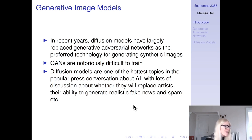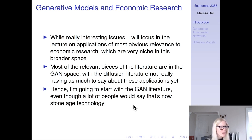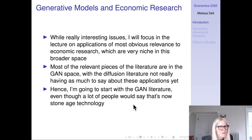People talk about stable diffusion and GPT-4 kind of in the same breath. These are really interesting issues — we can talk more about the ethics surrounding it in class on Thursday. But in this lecture I'd like to focus on applications that are of most obvious relevance to economic research, which are very niche applications. A lot of the relevant literature is still in the GAN space, with the diffusion literature not yet having as much to say about these particular applications.